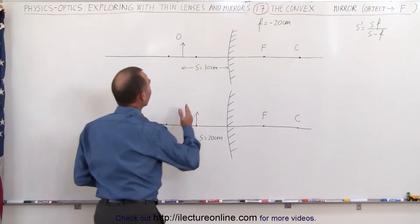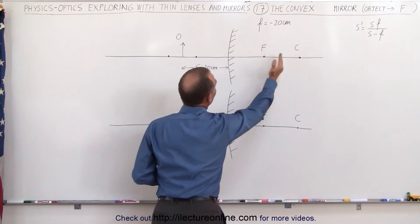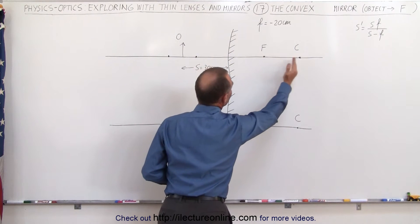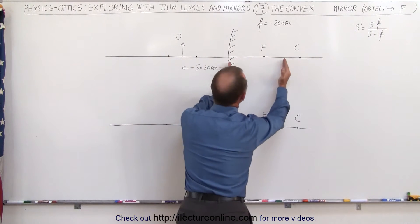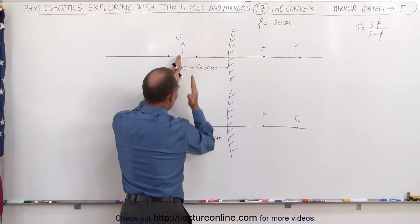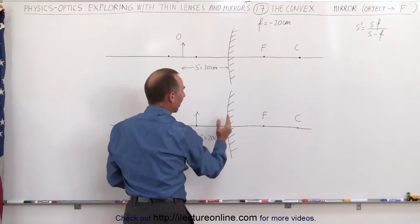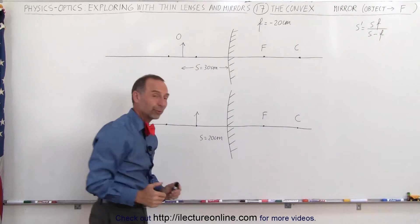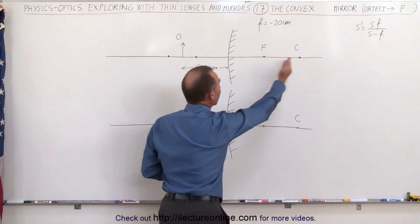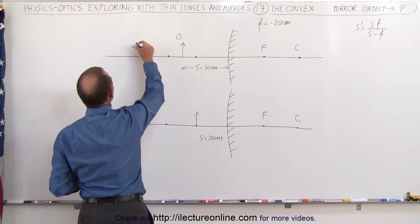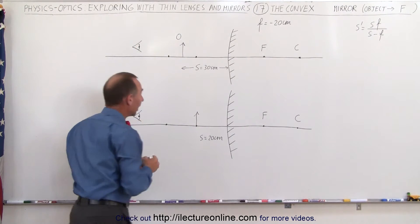We're going to place the object at a distance of 30 centimeters, which is the same distance as from the mirror to the halfway point between the focal point and the center of curvature on the other side of the mirror. We'll start with 30 centimeters, then move the object to 20 centimeters in front of the mirror, which is the same distance as from the mirror to the focal point behind it. Convex mirrors have focal points and centers of curvature behind the mirror. The observer will be on this side in front of the mirror, and let's see what the ray diagrams will tell us.